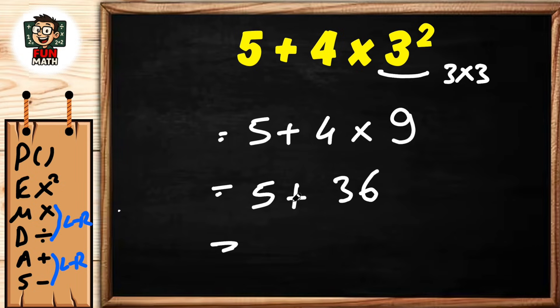Finally, addition: 5 plus 36 equals 41. We solved this solution in detail. I hope you understand.